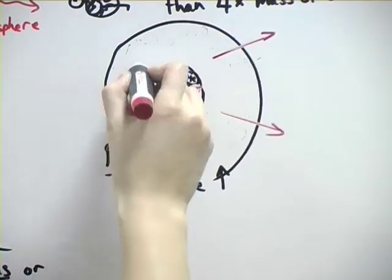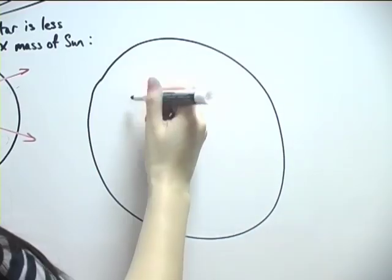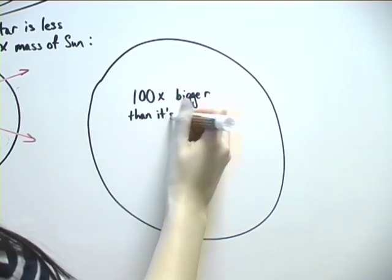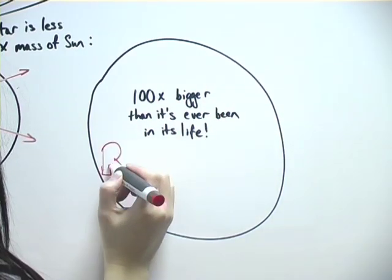The star ends up expanding much more than it did before, and it becomes about a hundred times bigger than it's ever been in its life. It has turned into a red giant.